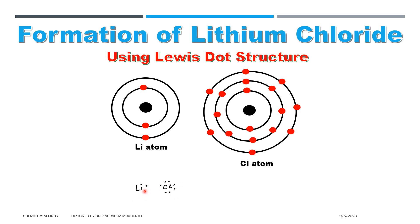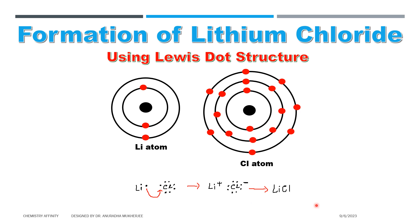Now lithium donates its one electron to chlorine. It forms lithium+ and Cl-. There is a strong electrostatic interaction between lithium+ cation and chloride anion, and we get ionic compound lithium chloride.